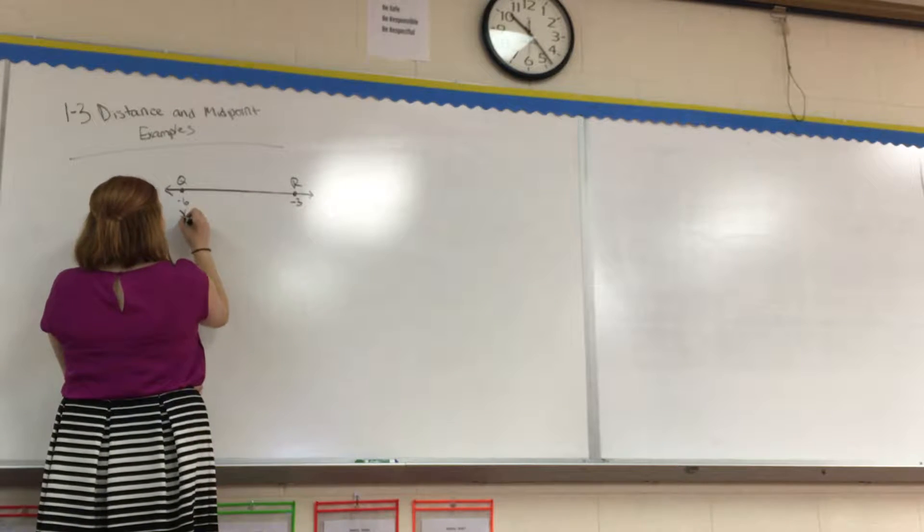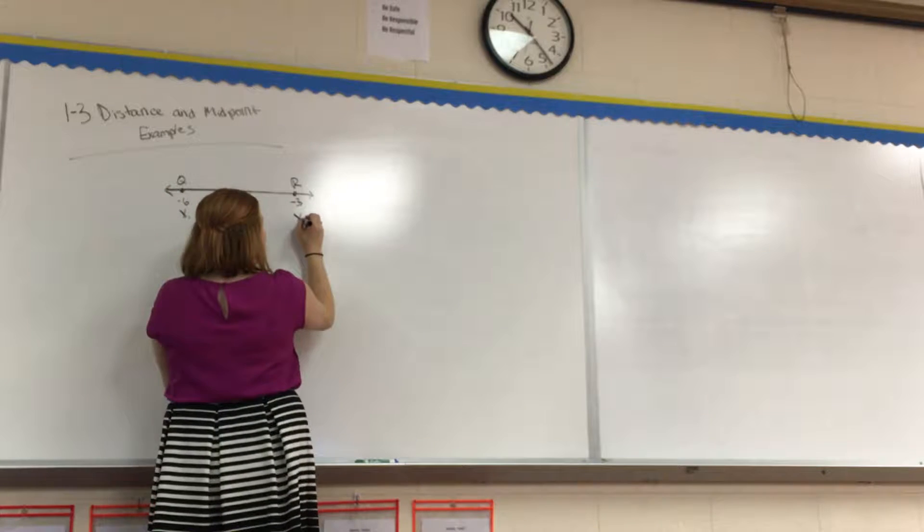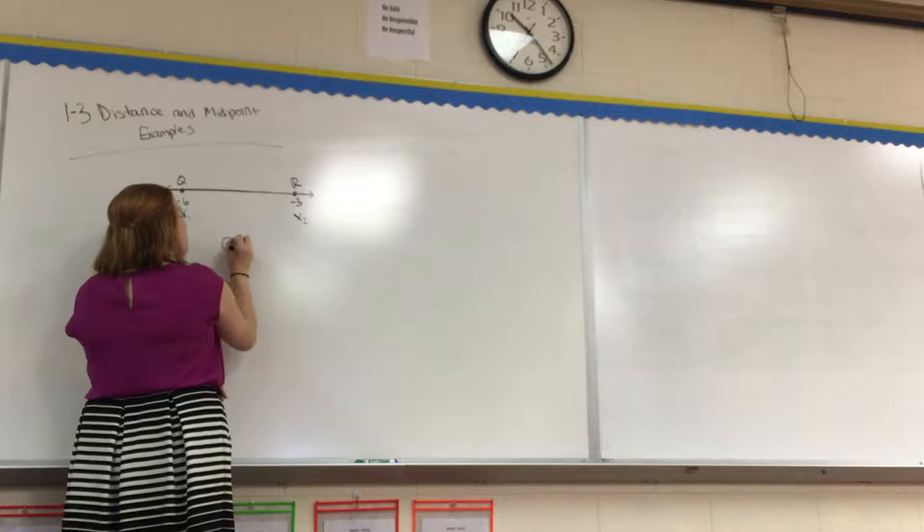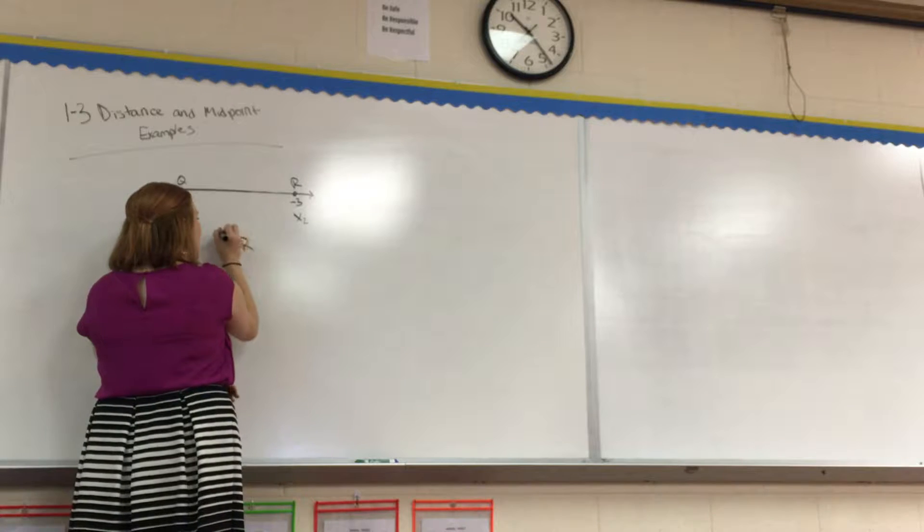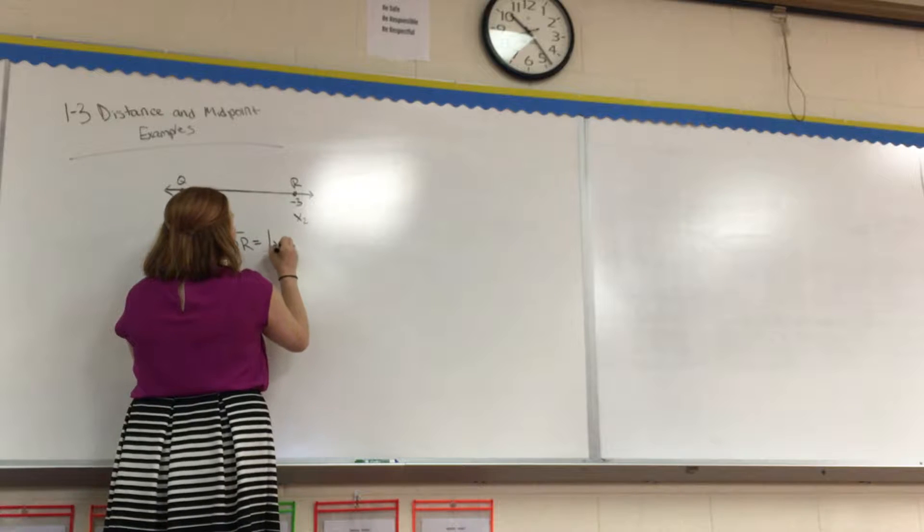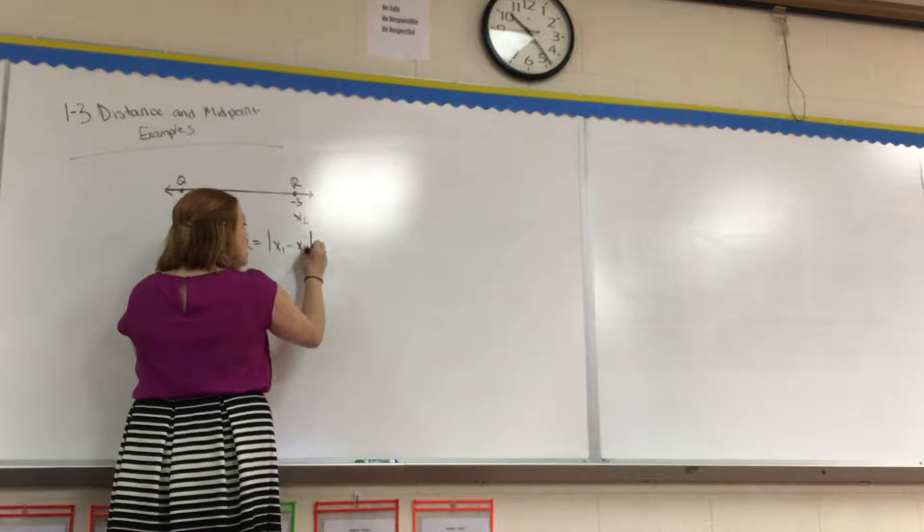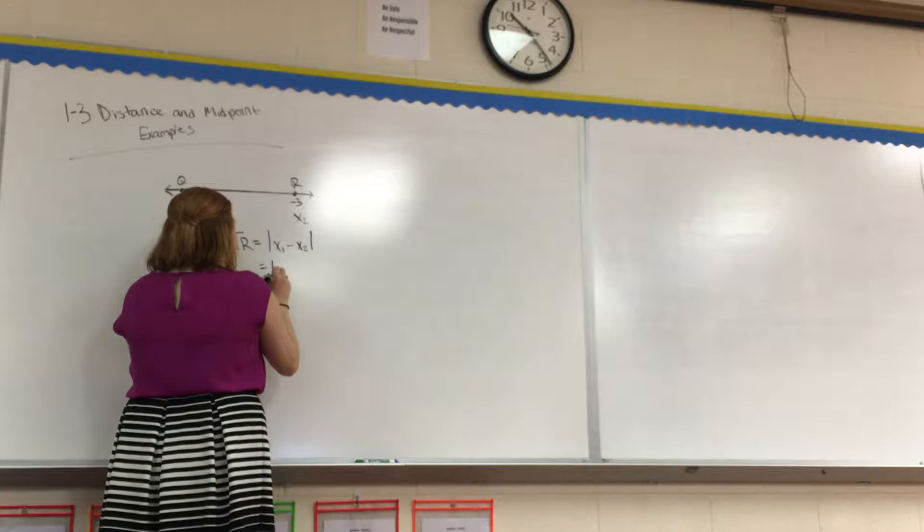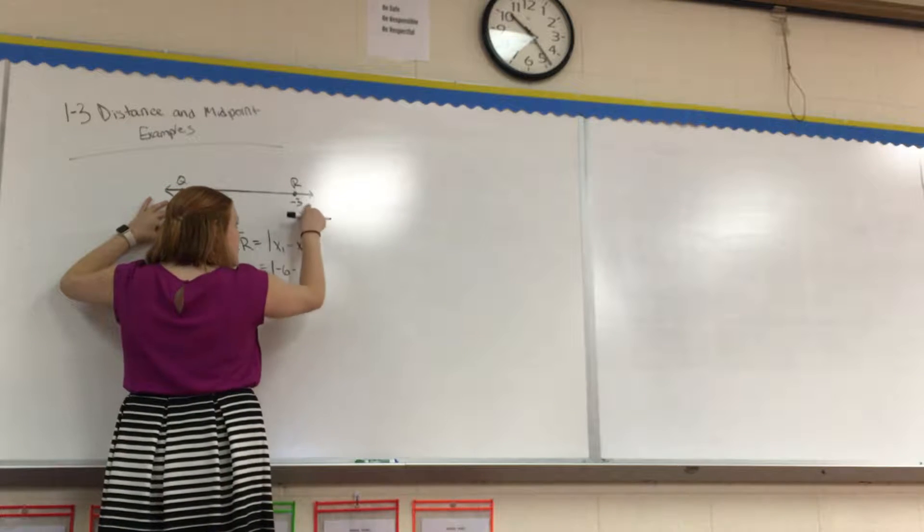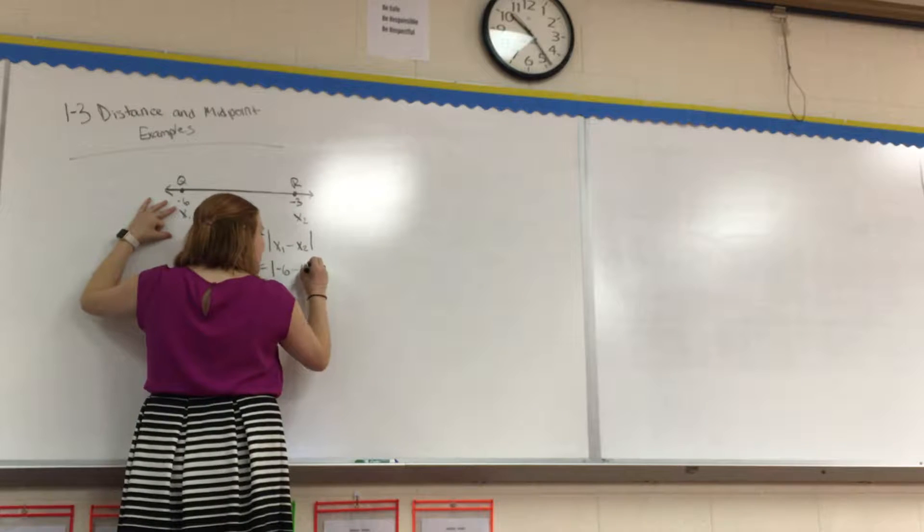So we are going to make Q X1, and we are going to make R X2. Using our midpoint formula, the line segment QR equals the absolute value of X1 minus X2. So now let's plug it in. X1 we see is negative 6, minus X2 is negative 3.